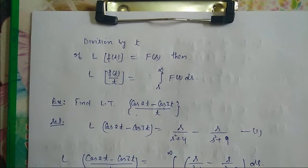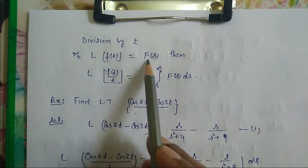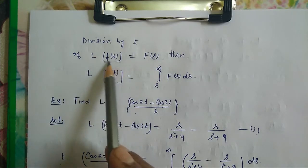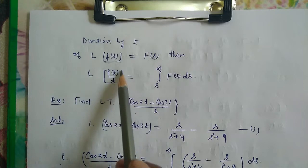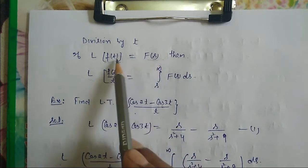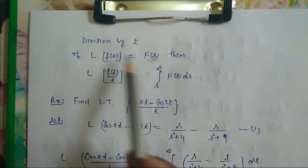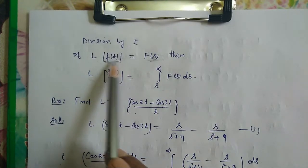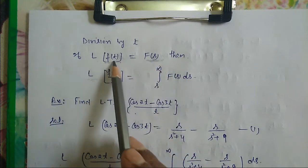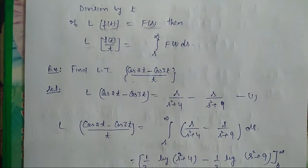Let us see the next rule: Division by t. If we know the Laplace transformation of function f(t), say it is F(s), and if I divide this function by t, then it becomes F(s) integrated from s to infinity. So once again, if I know the Laplace transformation of f(t), that is F(s), and I need to divide by t, then I will integrate from s to infinity.